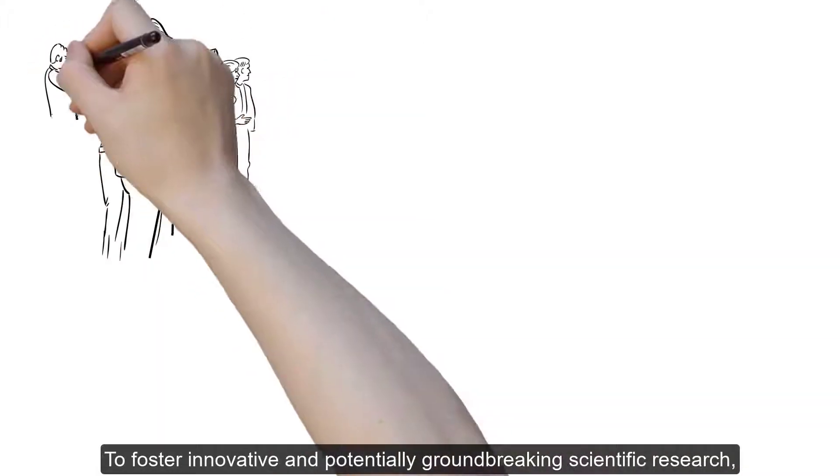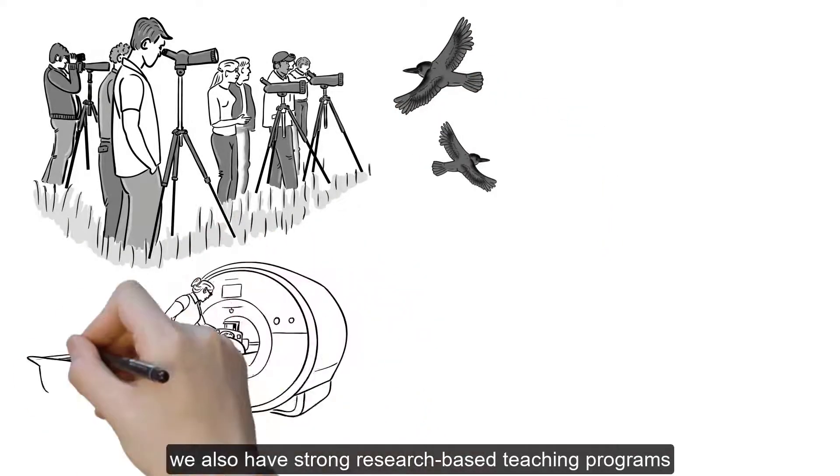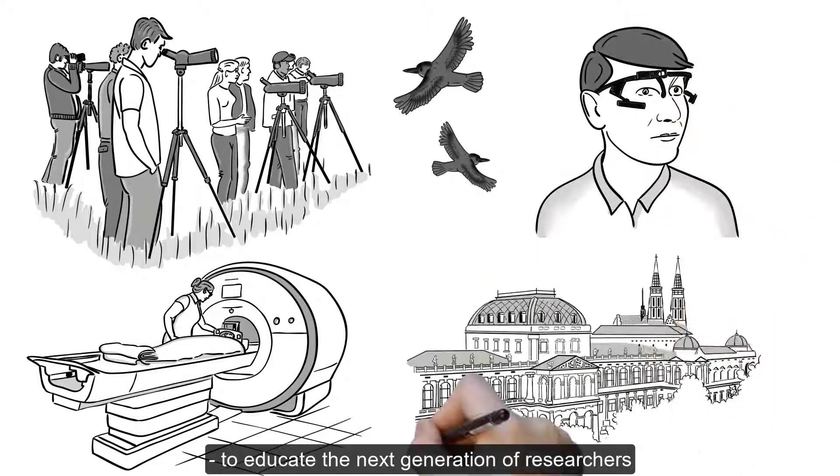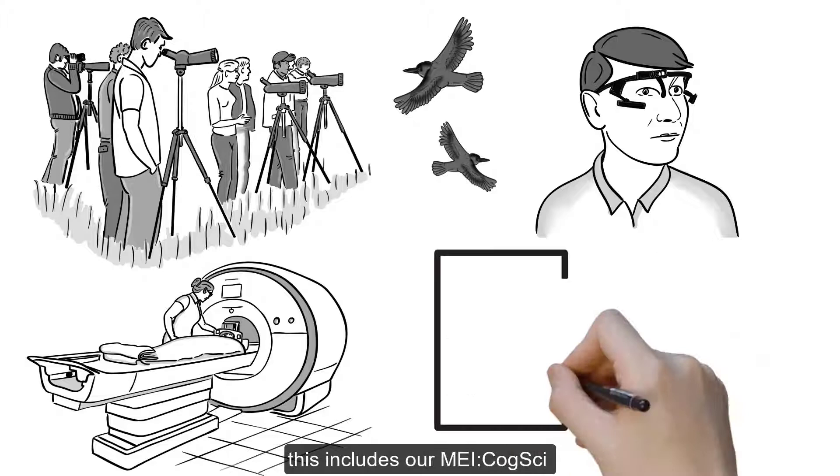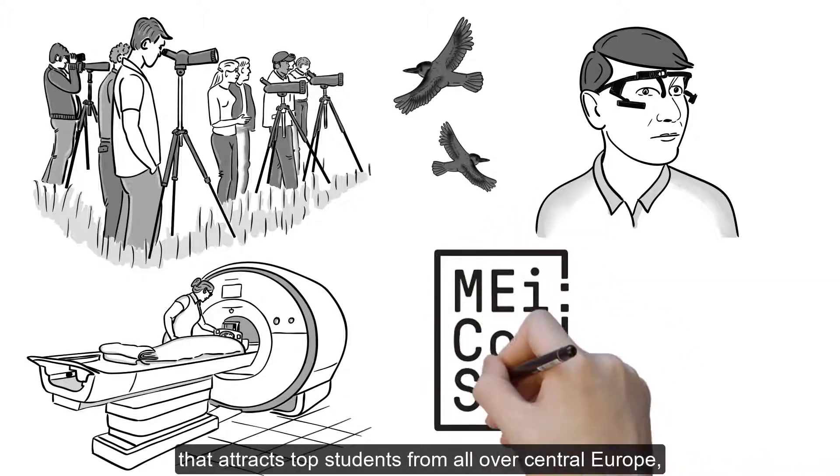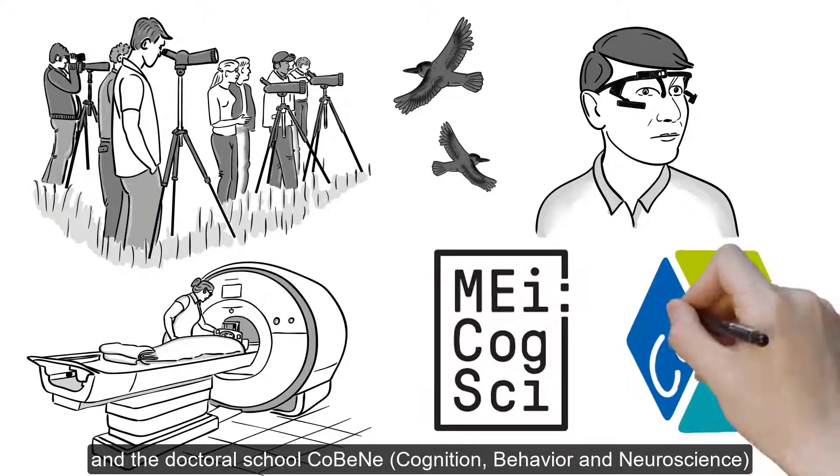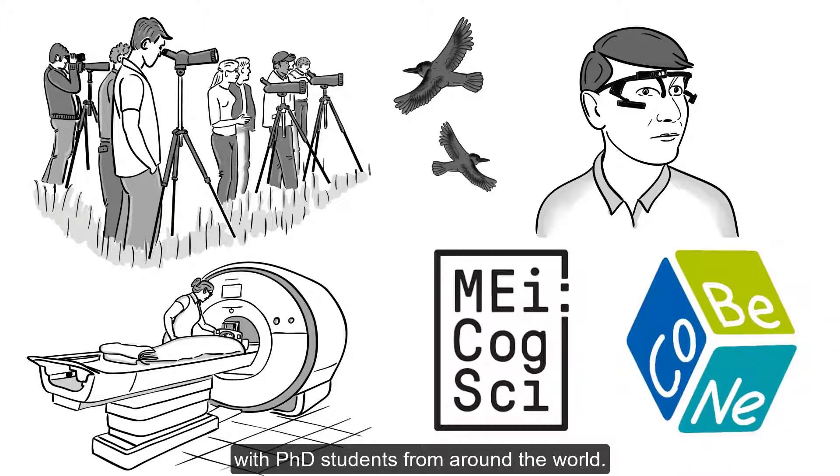To foster innovative and potentially groundbreaking scientific research, we also have strong research-based teaching programs to educate the next generation of researchers in the Vienna style of cognitive science. This includes an interdisciplinary master program in cognitive science that attracts top students from all over Central Europe, and the Vienna Doctoral School of Cognition, Behavior, and Neuroscience, with PhD students from around the world.